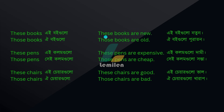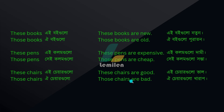These books are new — 'A boi gulo notun.' Those books are old — 'OI boi gulo puraton.' These pens are expensive — 'A column gulo dami.' Those pens are cheap — 'OI column gulo sosta.' These chairs are good — 'A chair gulo bhalo.' Those chairs are bad — 'OI chair gulo kharap.'